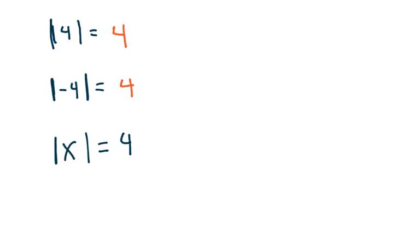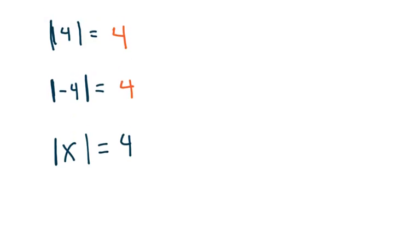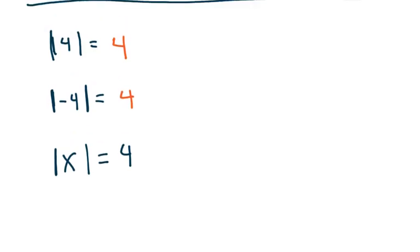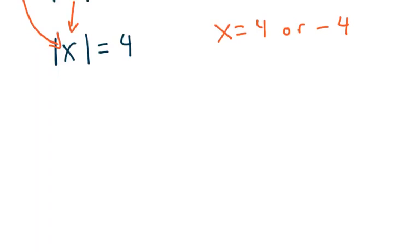The interesting question is: what is the absolute value of x when it equals 4? Based on those two previous statements, it means that x has to be 4 or x has to be negative 4. So we would say x equals 4 or negative 4. Now, this idea of 'make it positive' is not actually correct.